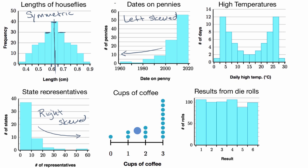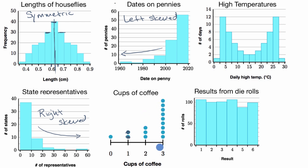Pause the video and think about what this next distribution would be. This could be a distribution of how many cups of coffee each person in an office drank per day. This is very similar to what we saw with the dates on pennies — a large amount of the data fell into the right bucket of three cups of coffee, but there was a tail to the left. So this would be left skewed.